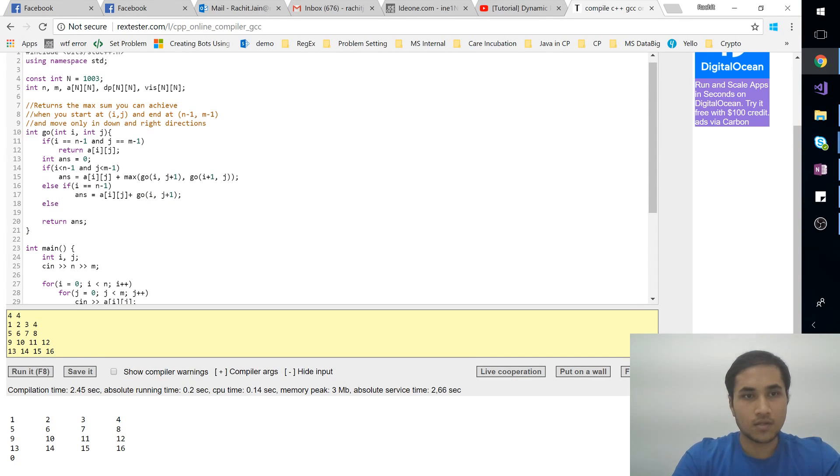Now we know that we're at the... now we know that j is n-1. So this means that we're at the topmost rightmost column, so we can't go right, we have to go down. And in this case the answer will be a[i][j] plus... I have to go down so i+1. That's the only choice I have.